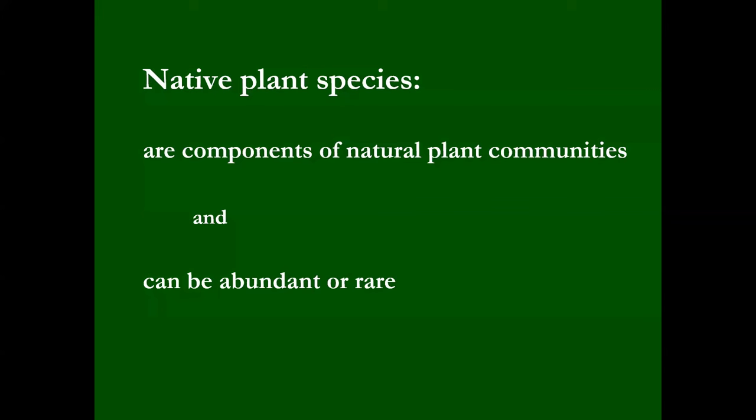Native plant species are typically not alone — they're surrounded by 20, 30, 40, or 50 other native plant species. When they occur in a repeatable assemblage based on site characteristics, we call it a plant community. Plant communities can be really common, like beech-maple forest, or really rare, like an inland salt marsh.